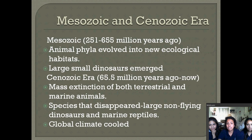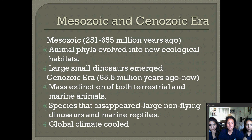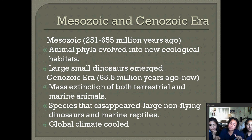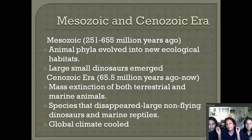The last two eras are the Mesozoic and Cenozoic eras. The Mesozoic era, from 251 to 65.5 million years ago, is when animal phyla evolved into ecological habitats and large and small dinosaurs emerged. When the Cenozoic era came, starting 65.5 million years ago to now, there was a mass extinction of both terrestrial and marine animals — large non-flying dinosaurs and marine reptiles disappeared.